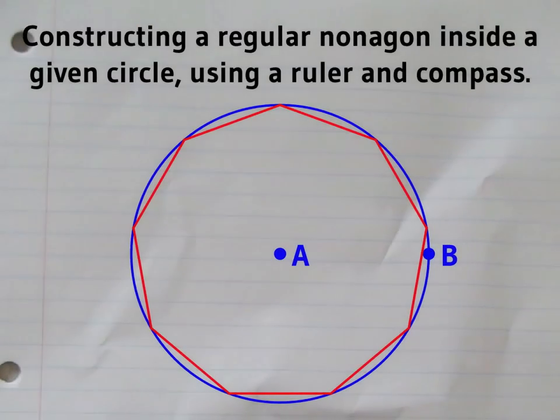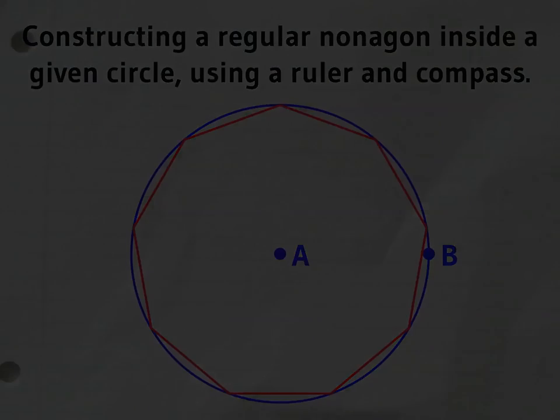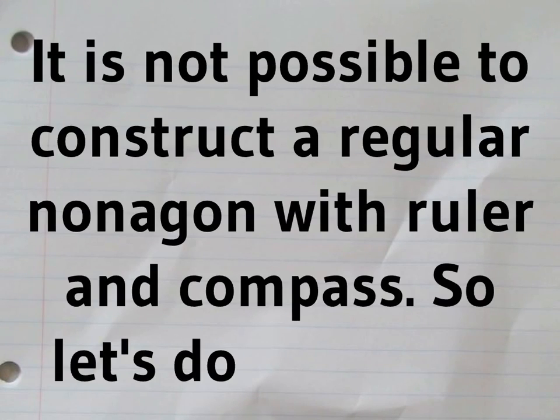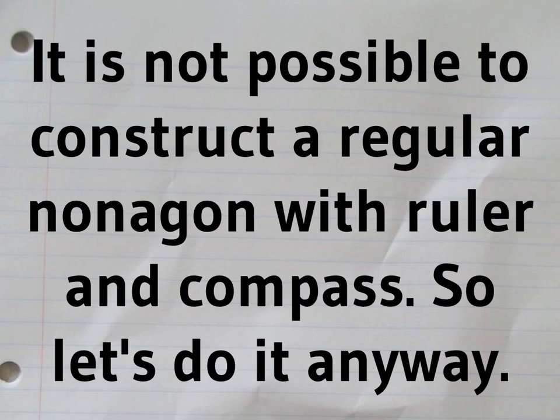It's not actually possible to construct a regular nonagon or enneagon using a ruler and a compass. This video shows you how to get so close, though, no one will see the difference.